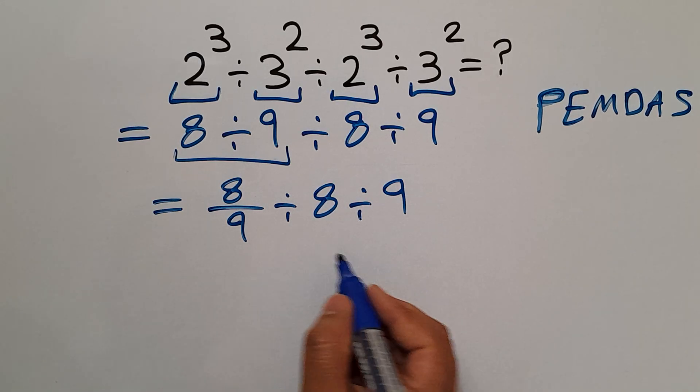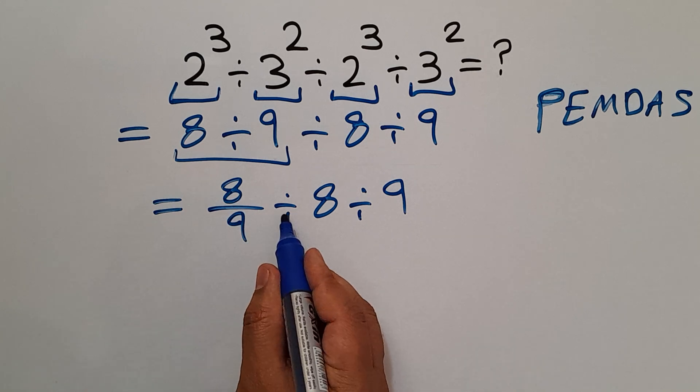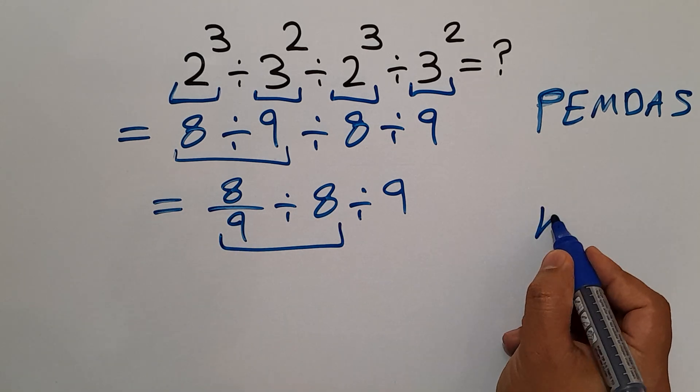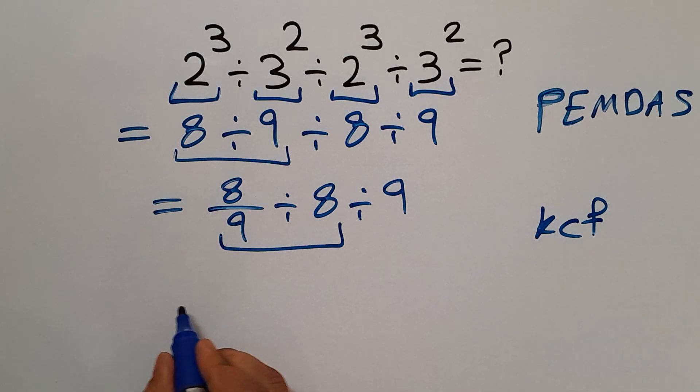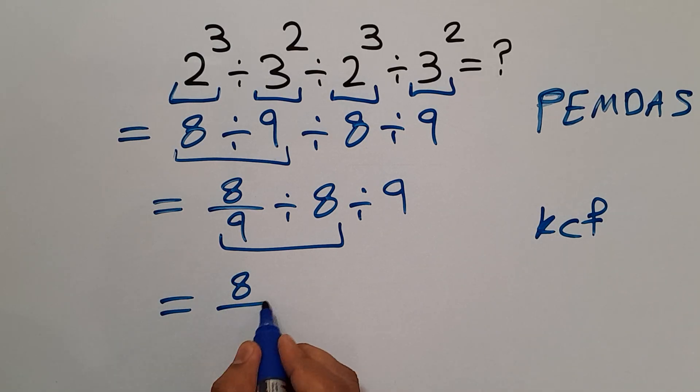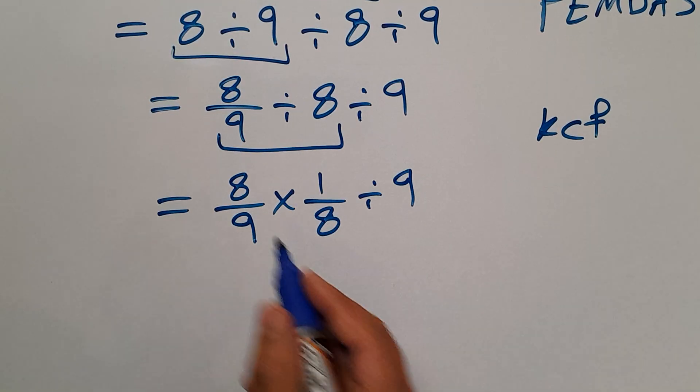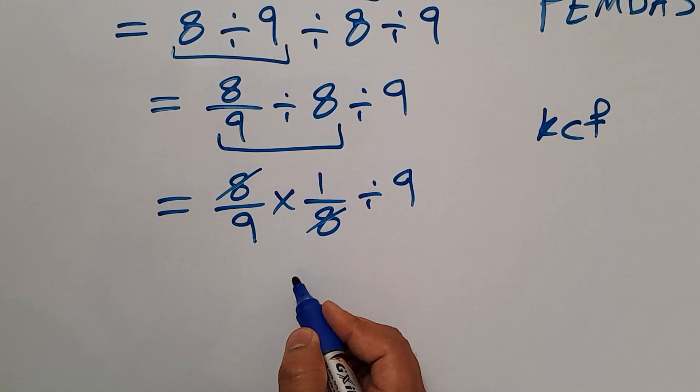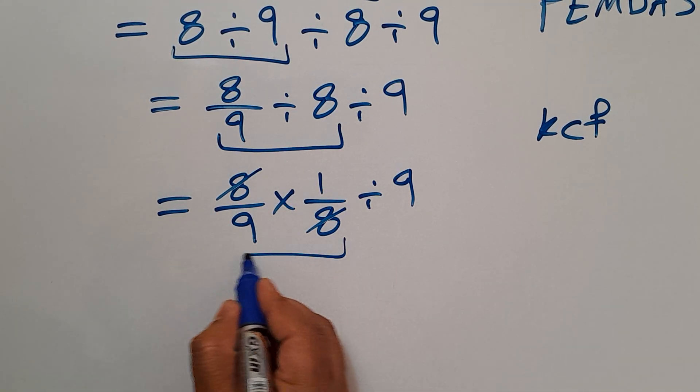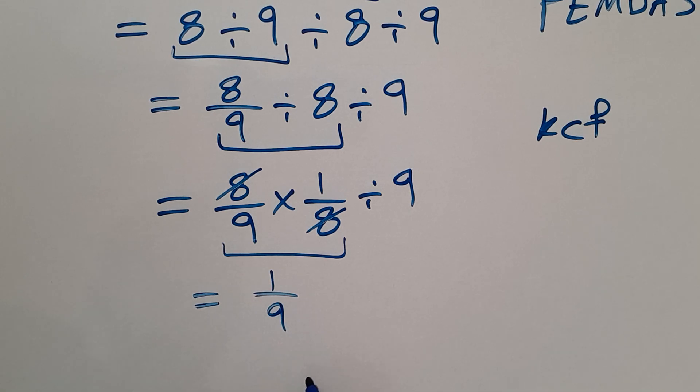And now, 8 over 9 divided by 8, according to the KCF rule, can be written as 8 over 9 times 1 over 8 divided by 9. This 8 and this 8 can cancel each other out, and here we have 1 over 9 divided by 9.